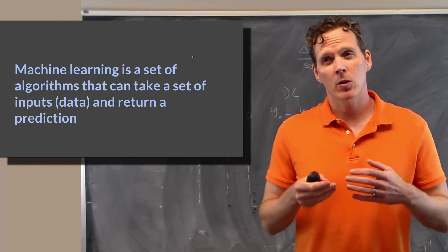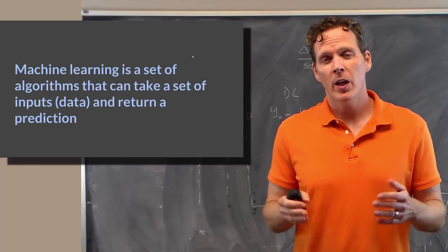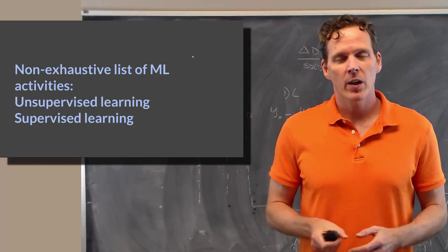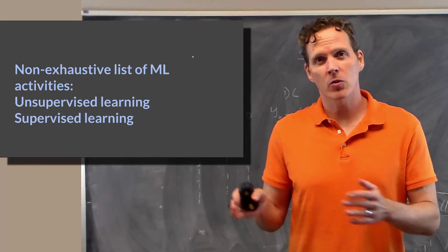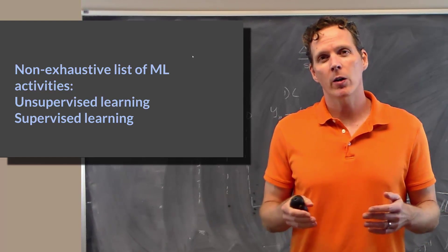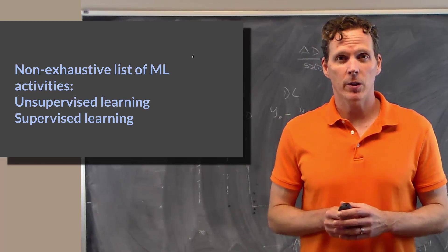I would classify the way in which it returns a prediction, at least in the two ways that are most useful for data science, as two broad categories. This is non-exhaustive, there's other aspects of machine learning, but the two I want to focus on are unsupervised and supervised versions of machine learning.